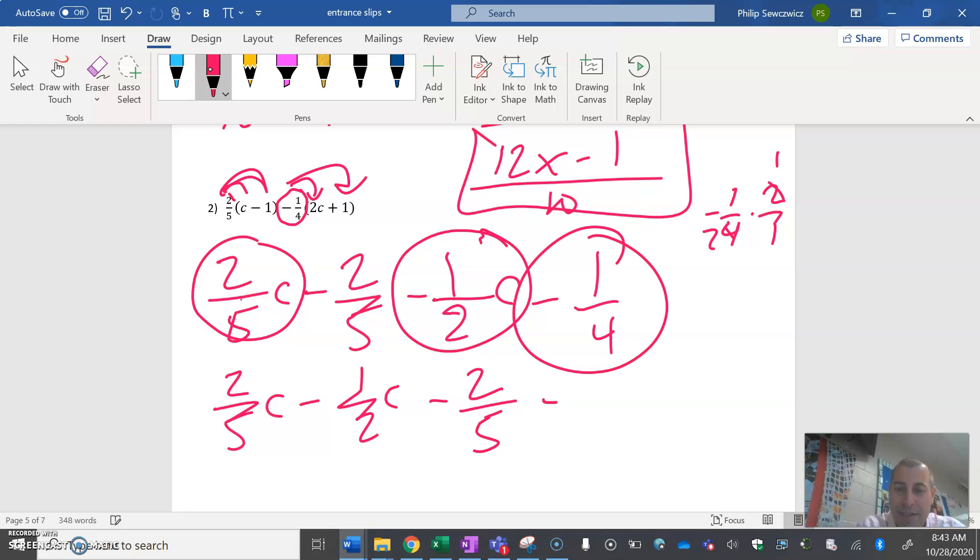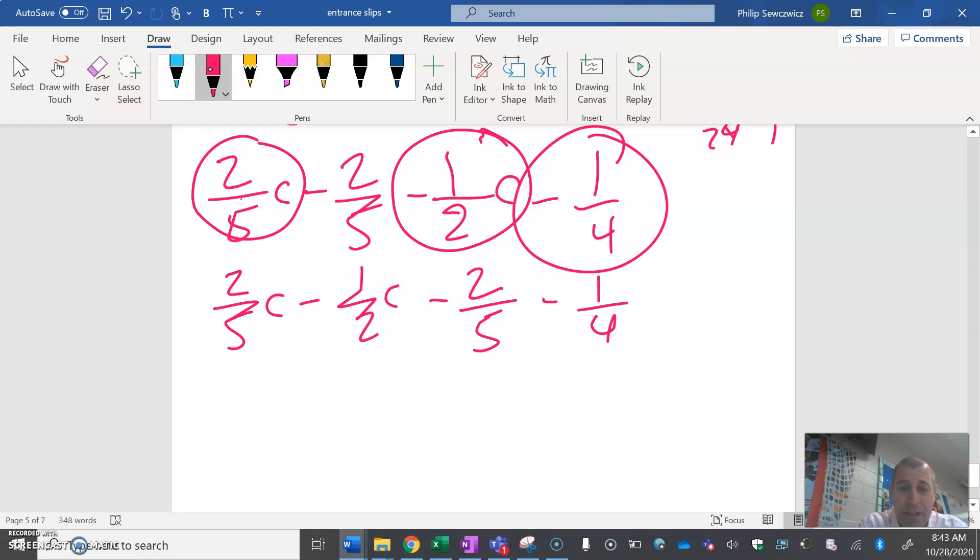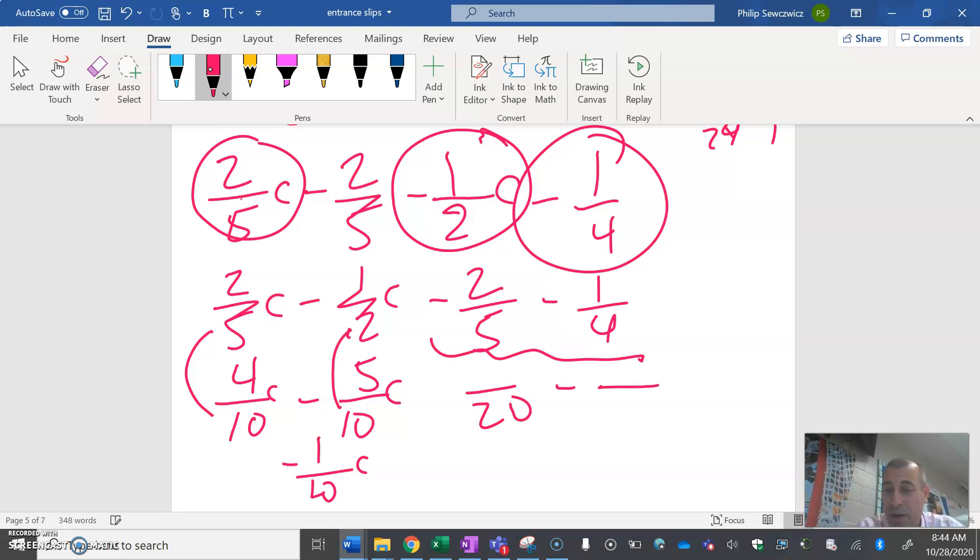Now we're in the situation we were in yesterday, combining only the like terms. I'm going to rewrite: c, c. I've got minus two-fifths and I've got minus one-half. I like to circle things, visually see what I'm dealing with. Common denominators: I've got five and two. Multiply by two: two over ten c. Multiply by five: five over ten c. I can combine these: four c minus five c, negative one c.